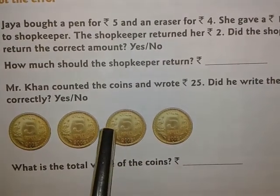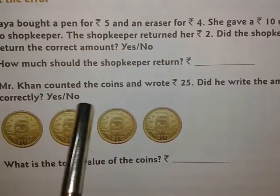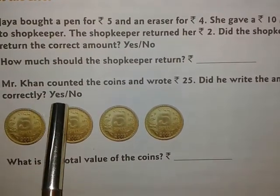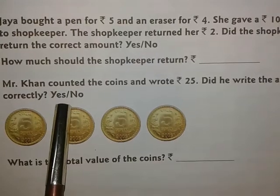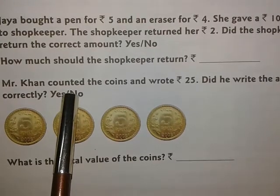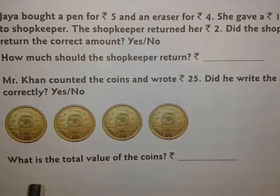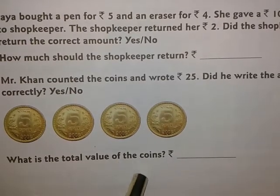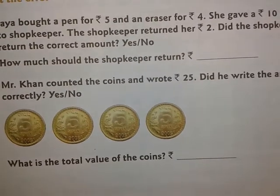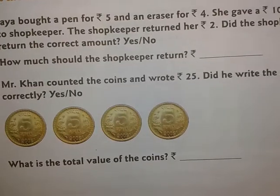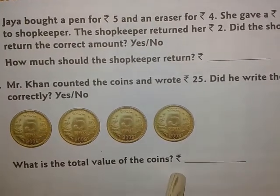Mr. Khan counted it and wrote it as Rs.25. Did he write the amount correctly? Yes or no? If you think it is no, then you will put a tick on no and write the correct amount — you will write the total value of the coins.